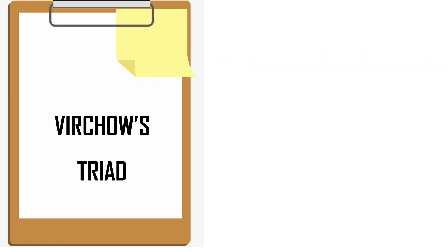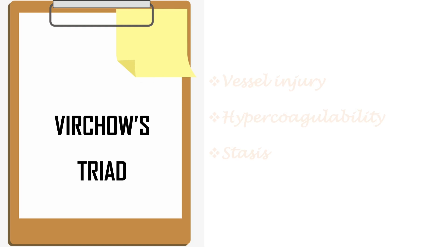Next one: Virchow's triad. We are already very much familiarized with that. Rudolf Virchow explains that three events are necessary to produce venous thrombosis: stasis, hypercoagulability, and vessel wall injury.